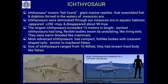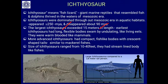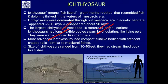Ichthyosaurs thrived in aquatic habitats of the Mesozoic era, appearing about 250 million years ago and disappearing about 90 million years ago — before the dinosaurs went extinct. The largest ichthyosaurs exceeded about 15 meters in length. The earliest ichthyosaurs had a long flexible body and swam by undulating like living eels, and they were warm-blooded like mammals.